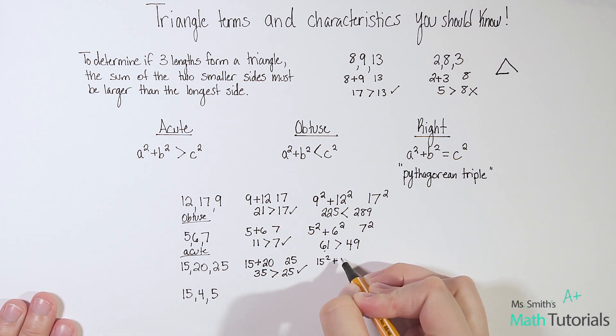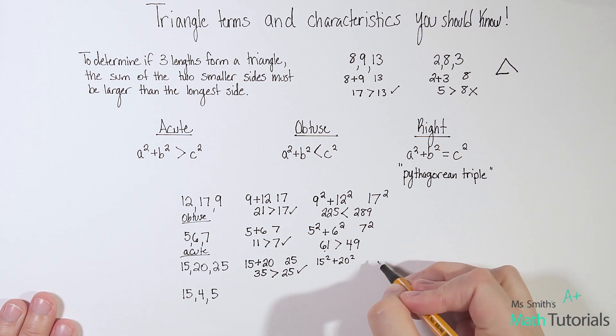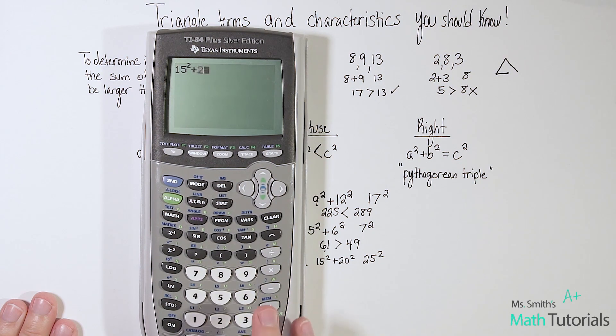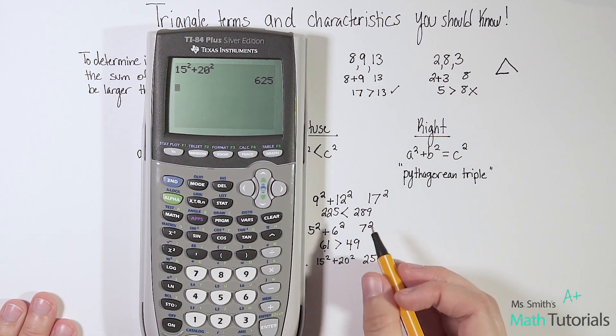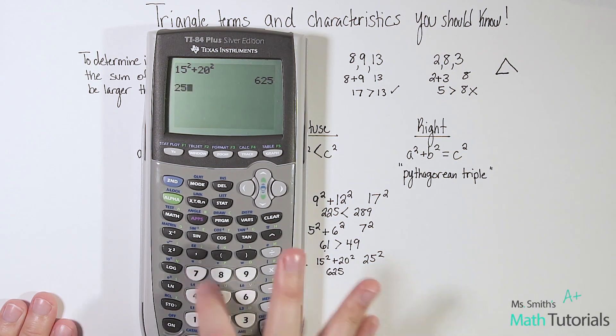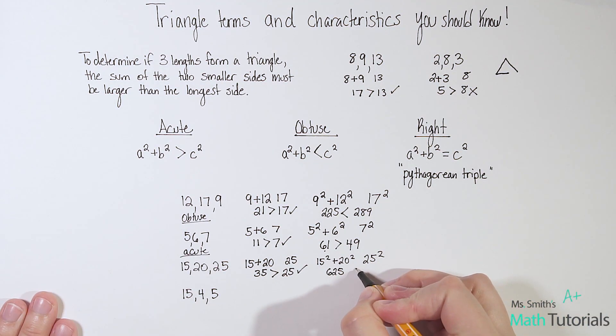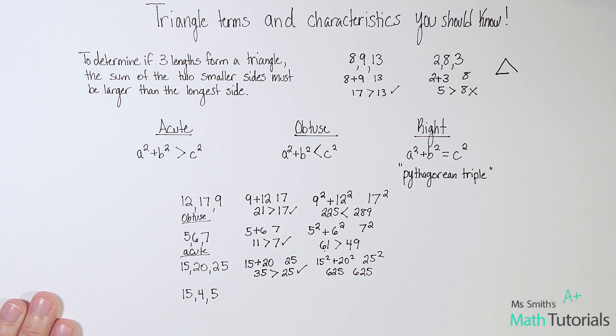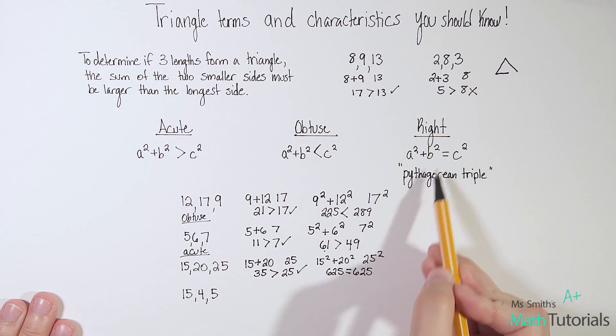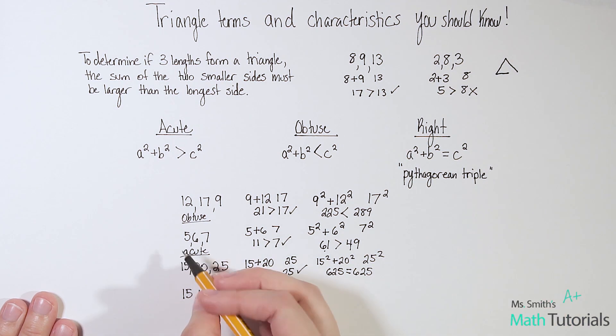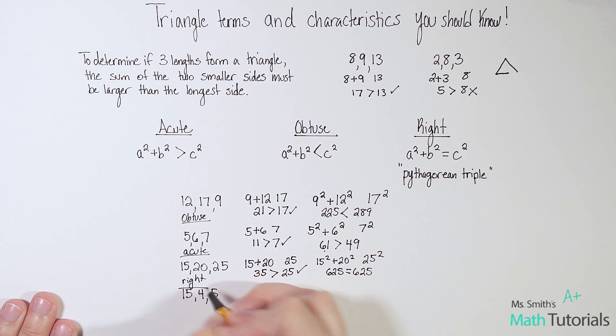I'm going to say 15 squared plus 20 squared. And let's see the relationship for those with 25 squared. So I'm going to bring out my calculator to help me. 15 squared plus 20 squared. That would be 625. And then 25 squared, also 625. So let's look at this. So when I simplified both of these, they were both 625. So what do we do when a squared plus b squared equals c squared? Well, that's a right triangle. Or I could call them a Pythagorean triple. I could use either terminology. I'm just going to call it a right triangle.